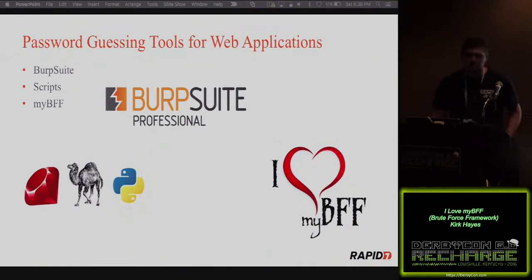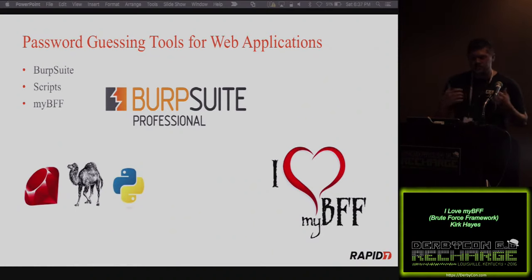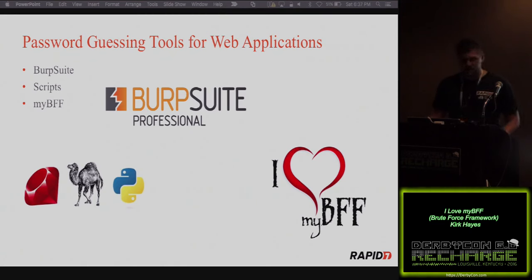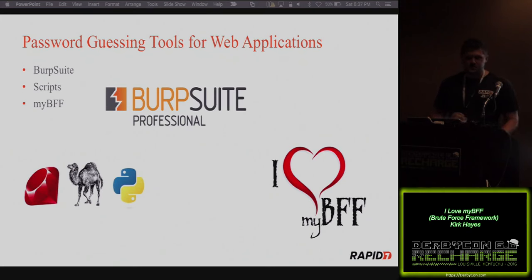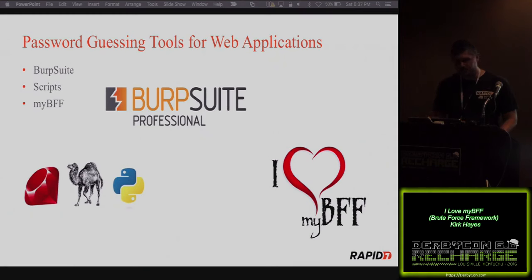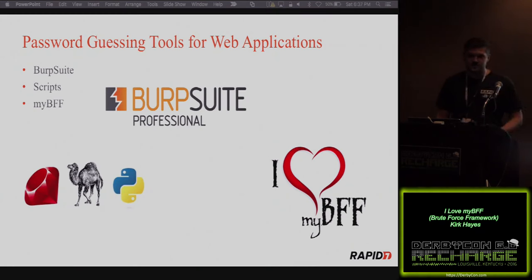We have different tools for guessing against these web applications. Burp Suite is one of my favorite tools — you get to see the traffic, proxy it through, and you can decide which is the username field and the password field and run an attack and look at the results. There are also one-off scripts for specific applications — some I've used are for Citrix — but they're very specific to that application only. With Citrix, every couple of years they change how everything's written and you have to have a new script, so a script for Citrix built in 2010 isn't going to work in 2016. And lastly, there's MyBFF, which I wrote.